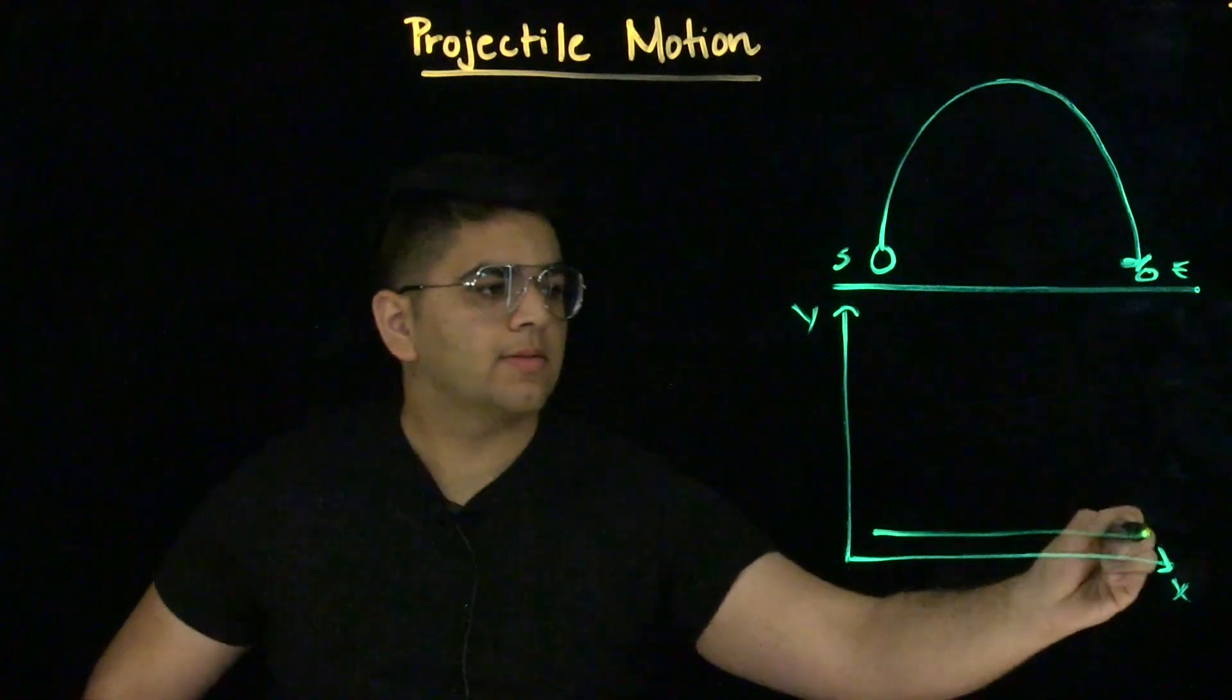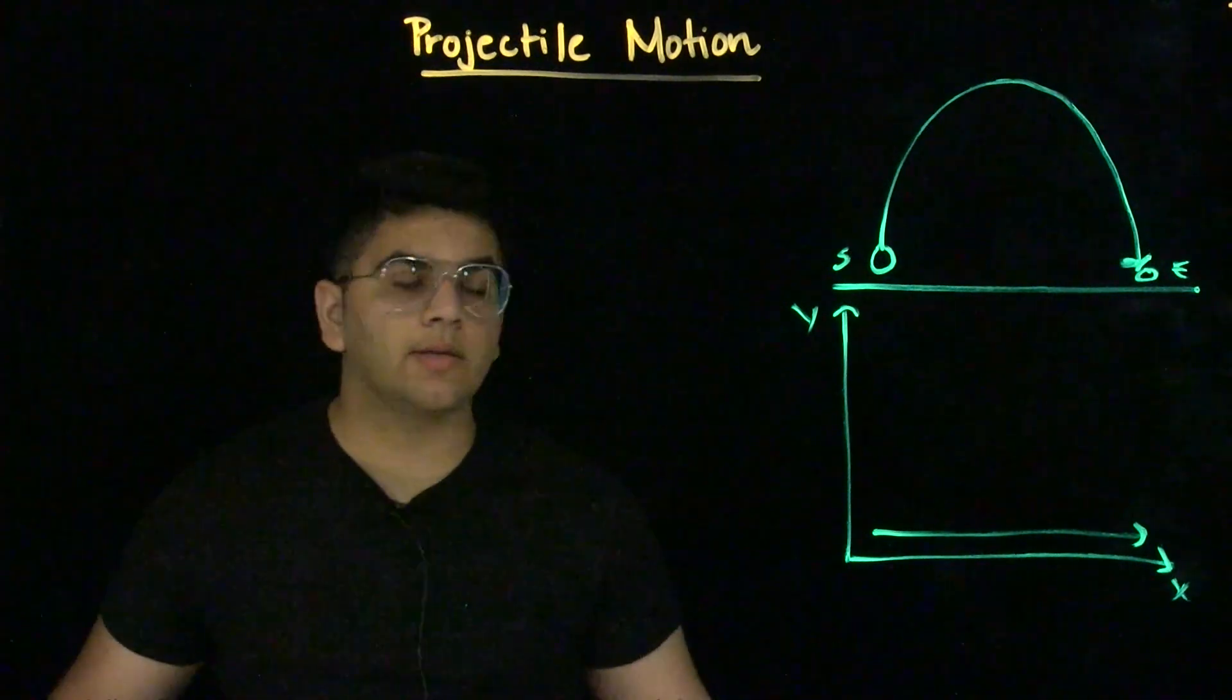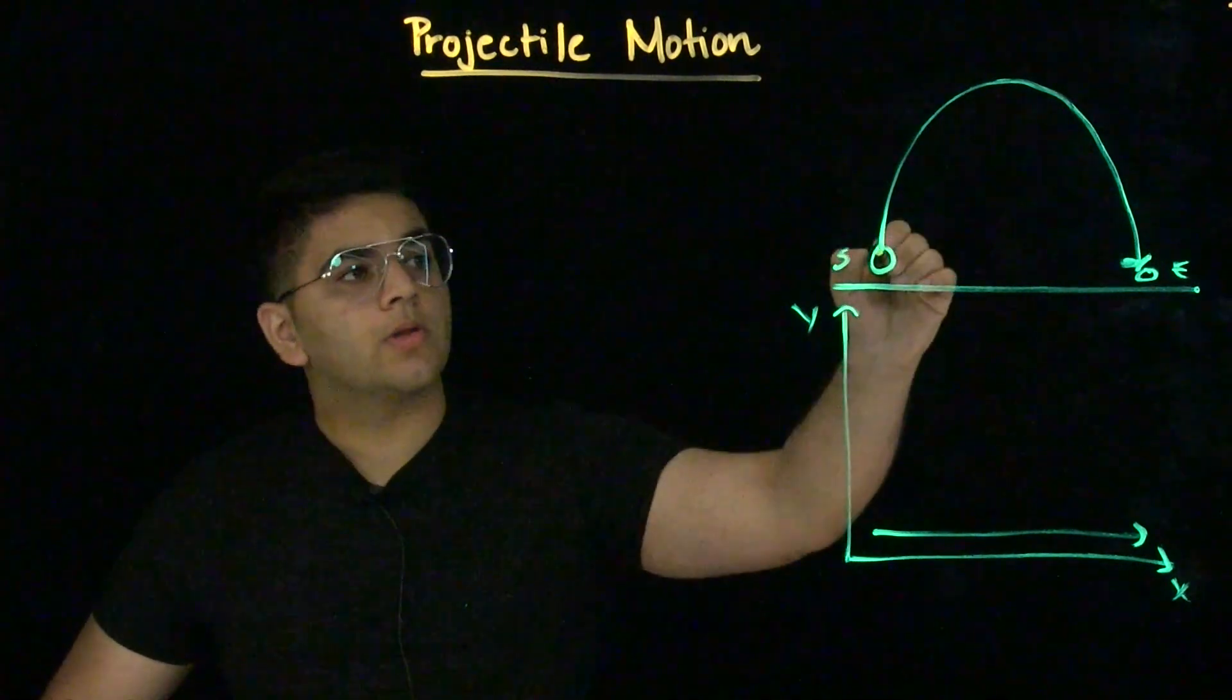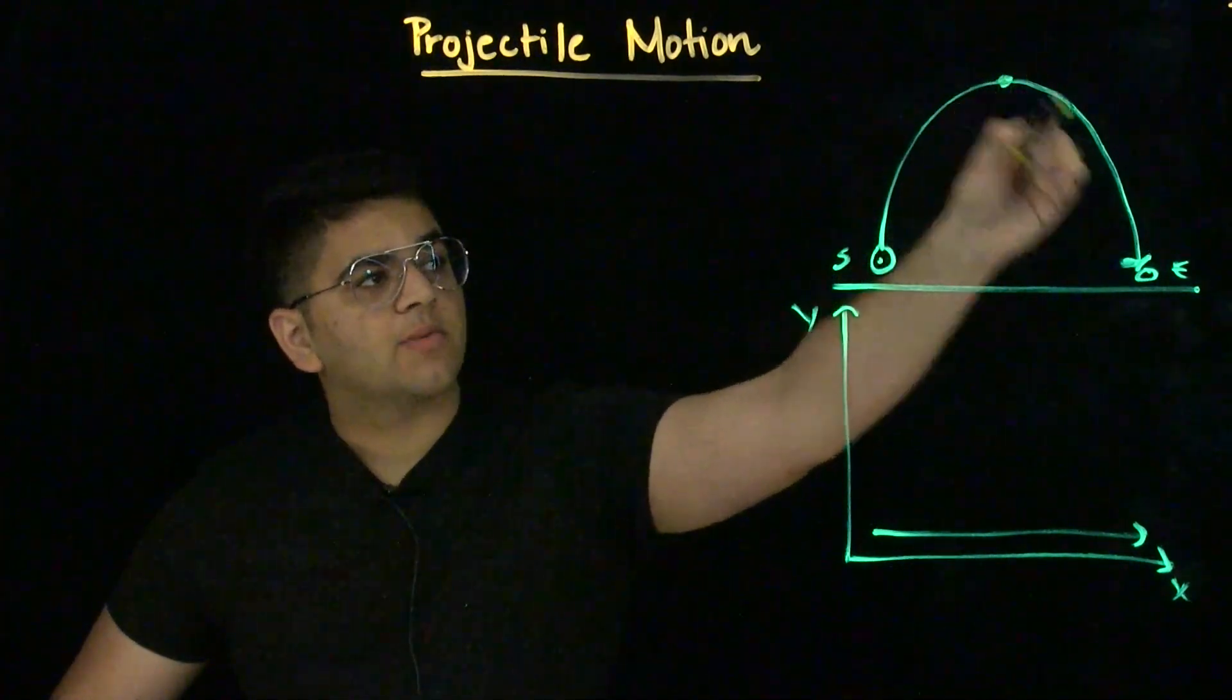So that means there was an x-axis change or displacement. Hence, there was a velocity. Now, we know the projectile goes up to a certain height and then comes back down.